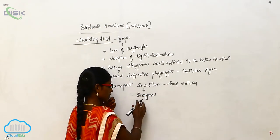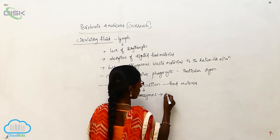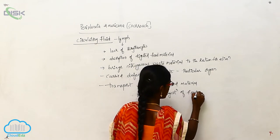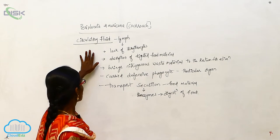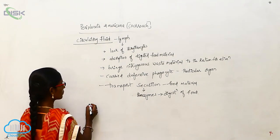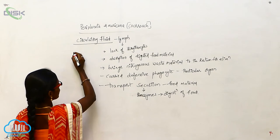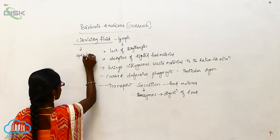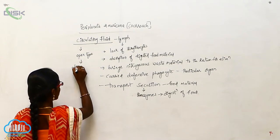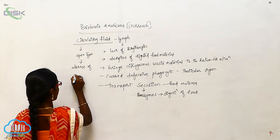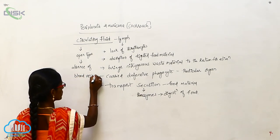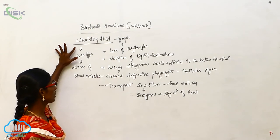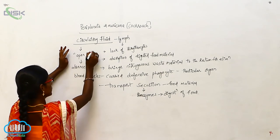Lymph also transports secretions such as hormones and enzymes. These enzymes are involved in the digestion of food. The circulatory system of Periplaneta is open type because of the absence of blood vessels — that is why it is called an open type circulatory system.